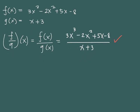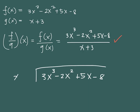When using long division, we place 3x cubed minus 2x squared plus 5x minus 8 under the division sign, and the divisor x plus 3 is placed outside. We look for a term that multiplied by x gives 3x cubed — that term is 3x squared. Multiply 3x squared by x plus 3: 3x squared times x is 3x cubed, and 3x squared times 3 is positive 9x squared.